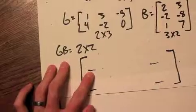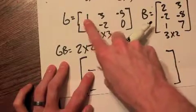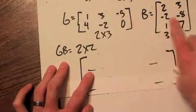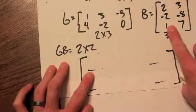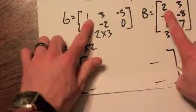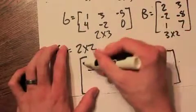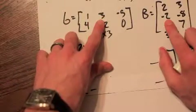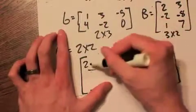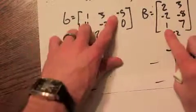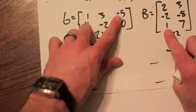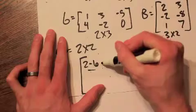We get the information we need from G, first row, times the first column in B. So 1 times 2, which is just 2, plus 3 times negative 2, which is negative 6, and then plus negative 5 times 1, which is just negative 5.